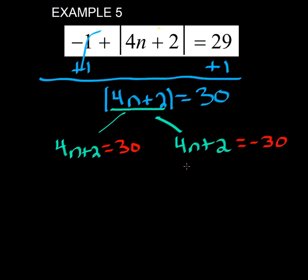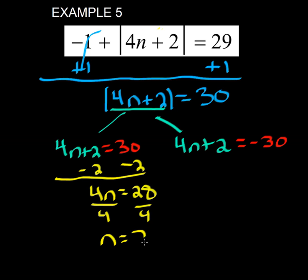Now we're going to solve for n. I've got to get rid of the 4 and 2. The 2 is the constant, so I'm going to subtract 2 from both sides. We get 4n equals 28. Then we divide by 4, so n equals 7.